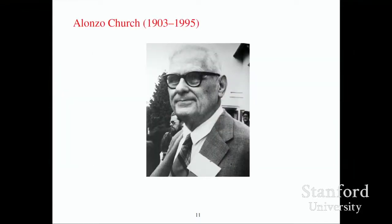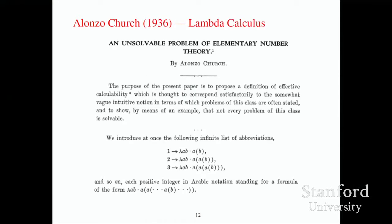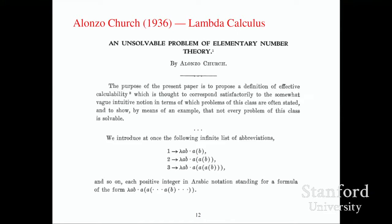The first horse past the finish line was Alonzo Church, who came up with a definition of what it meant for something to be an algorithm. He said anything you can write down in lambda calculus is an algorithm. He had certain ways of representing numbers and doing stuff with them, and then showed that the Entscheidungsproblem was not solvable if lambda calculus was your definition of algorithm. Lambda calculus went on to become the foundation for functional programming.